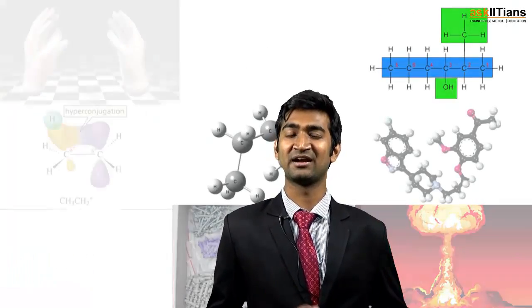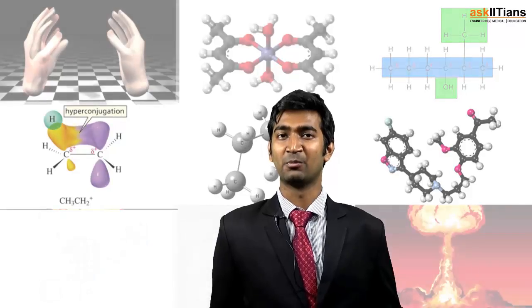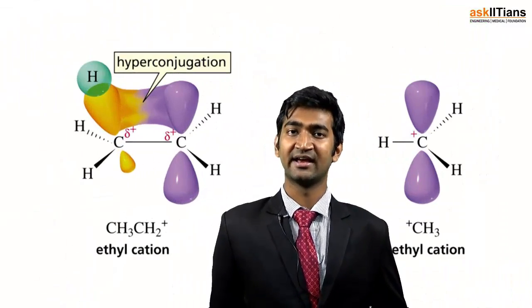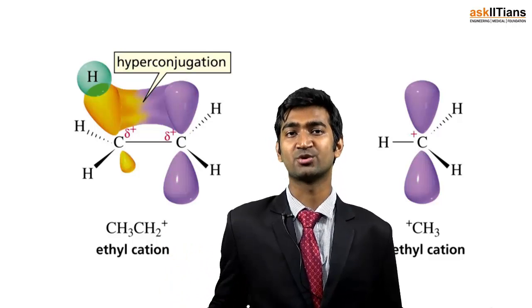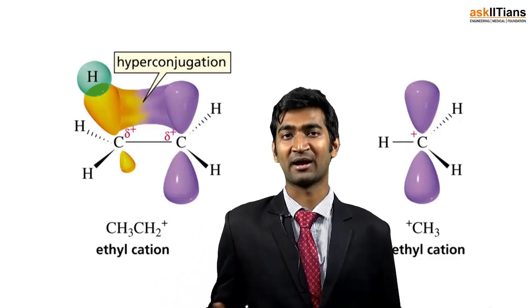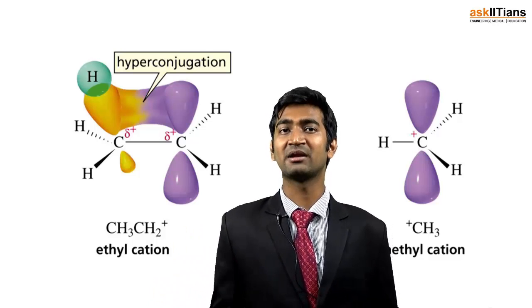Welcome back students. In the last part I told you that there is something related with stability. It's not only about the inductive effect, it's not only about the mesomeric effect or electromeric effect, but the role which hyper conjugation plays is a role which it plays in the unsaturated bonds — the pi bonds and sigma bonds.